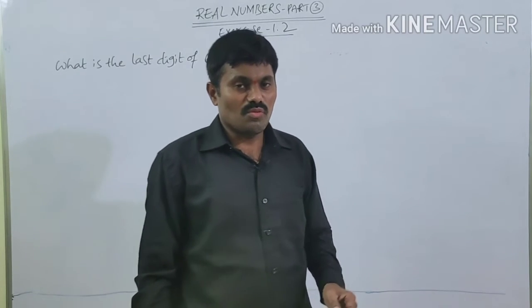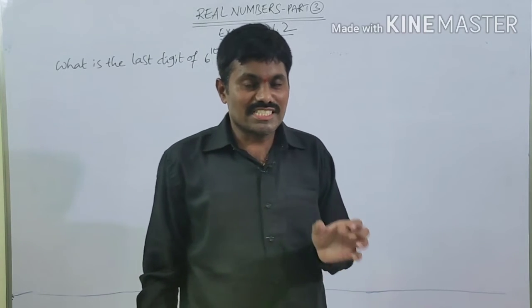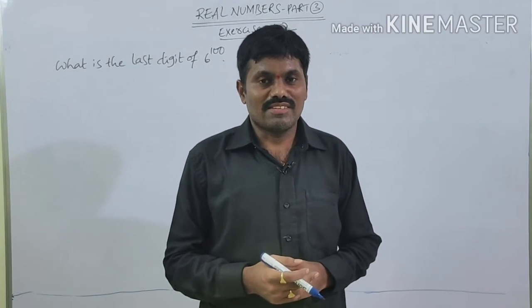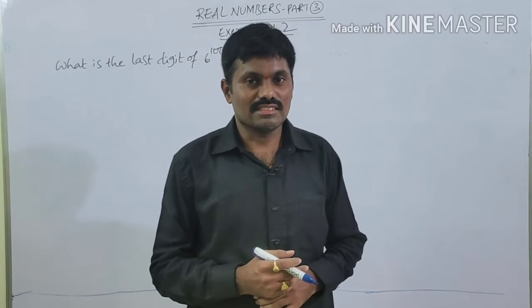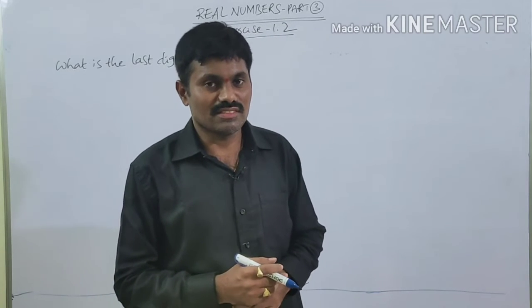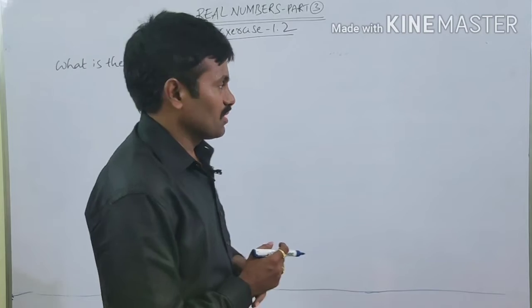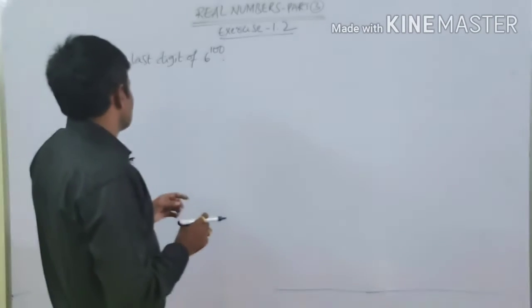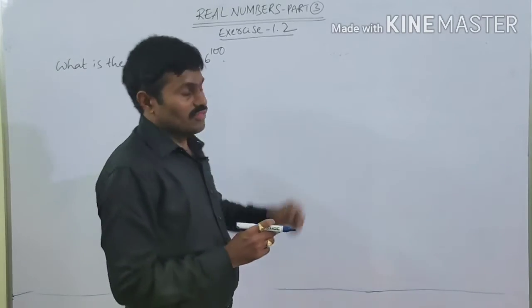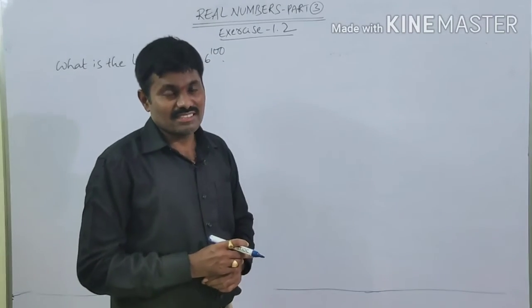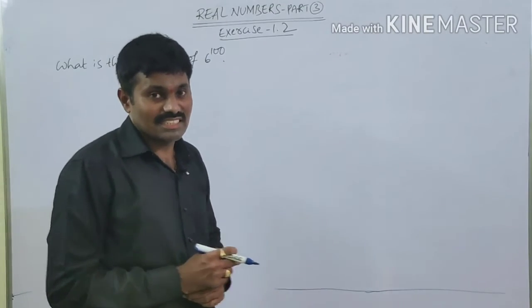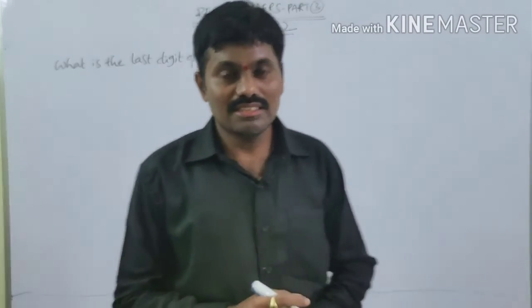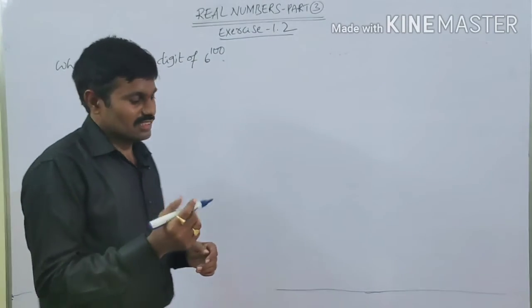Now, my dear students, let us find the unit digit in the expansion of a given exponential expression. What is the unit digit in the expansion of the given number? The last digit is nothing but the unit digit. For example, we are given 6 to the power of 100. What is the unit digit of 6^100?